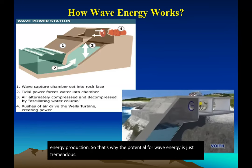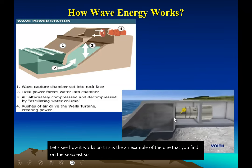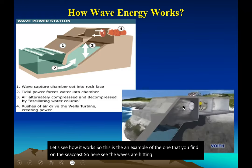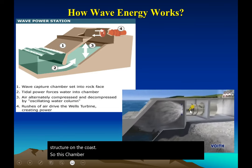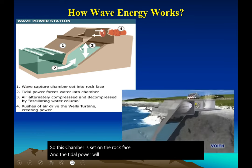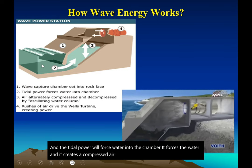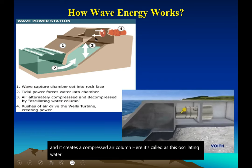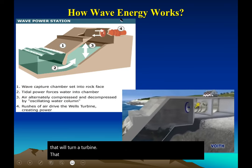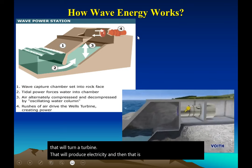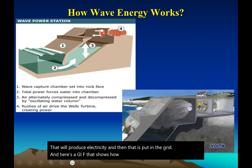Here is an example of a wave energy device on the seacoast. The waves hit a concrete structure on the coast; this chamber is set on the rock face. The tidal power forces water into the chamber, creating a compressed air column — this is called an oscillating water column — which creates a pressure difference in the chamber that turns a turbine to produce electricity, which is then put into the grid. A GIF shows how this high pressure turns the turbines.